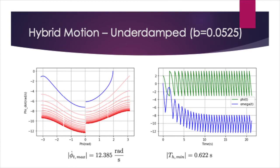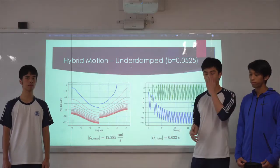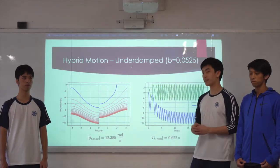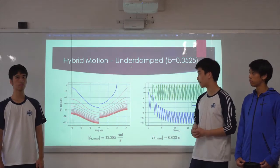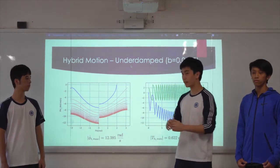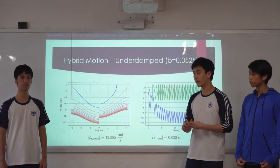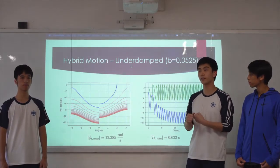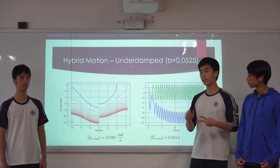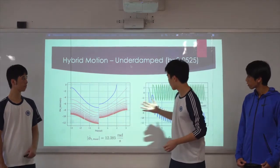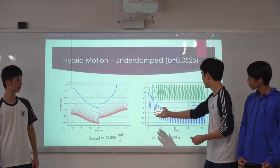We took both of these models and incorporated them into one hybrid motion to model the bird's motion as a combination of radial and tangential. We did this for three sets of graphs. One is for an underdamped coefficient of 0.0525, and the results are shown here. As you can see, the final velocity is very high.